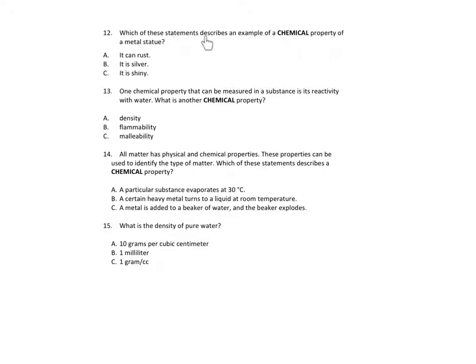Number 12. Which of these statements describes an example of a chemical property of a metal statue? A. It can rust. B. It is silver. C. It is shiny.